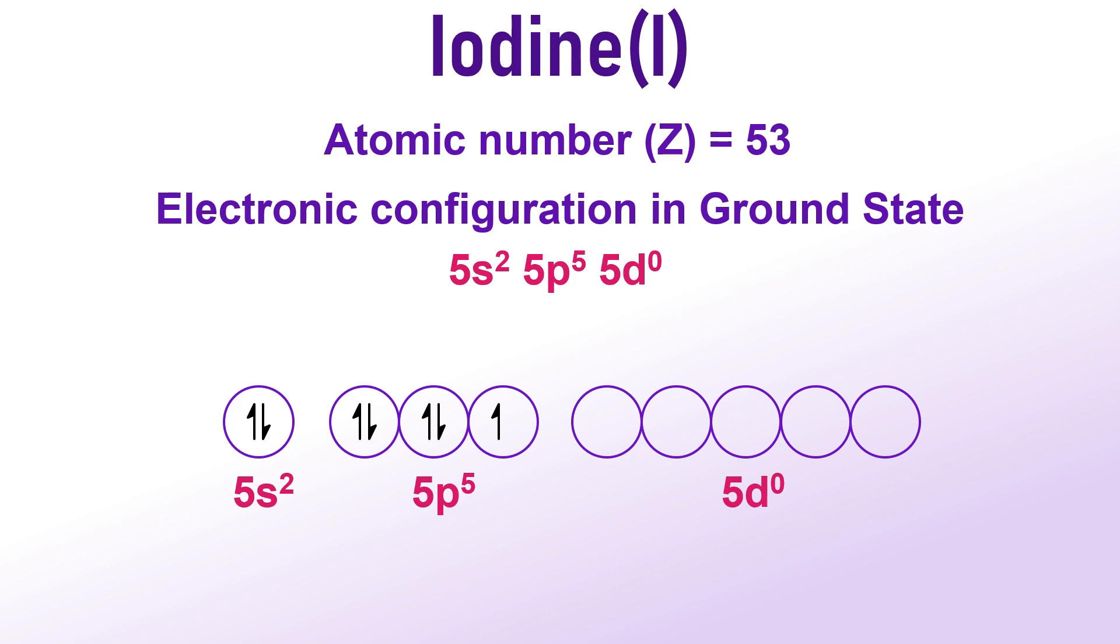Iodine's ability to form 7 bonds in IF7, signifying the presence of 7 unpaired electrons, raises the question of how and why iodine can engage in the formation of 7 bonds in this particular context. Here you can see only 1 unpaired electron, but iodine is forming 7 bonds in iodine heptafluoride. So, how is it possible? This is our question.